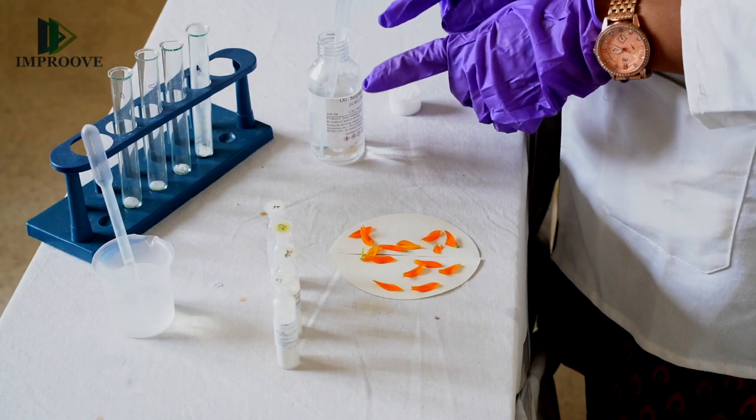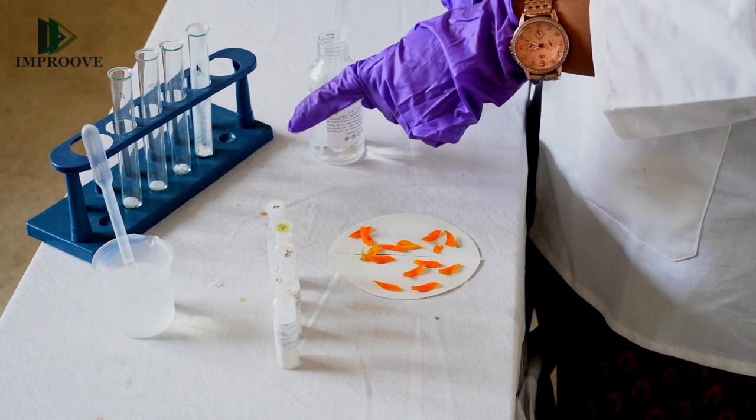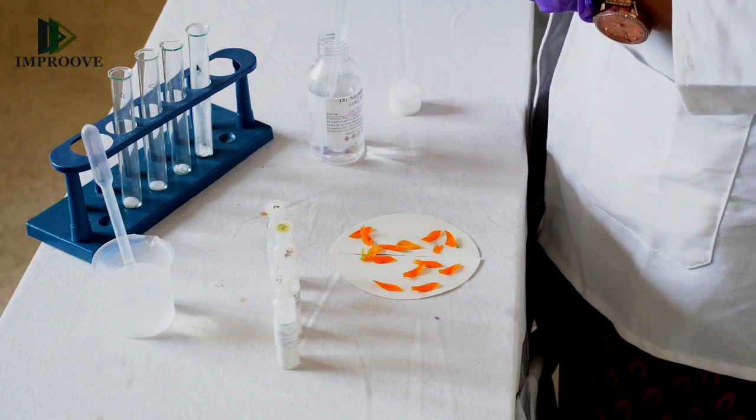In this experiment we will identify the bleaching powder among the given samples. For the experiment you will need dilute sulfuric acid and at least four test tubes. If you have more test tubes you can take about eight, but if you have four you can stick with four.